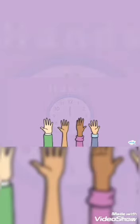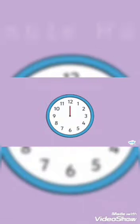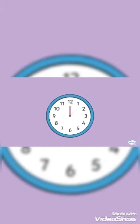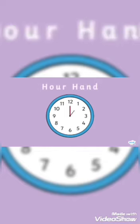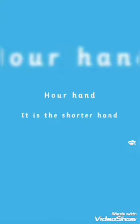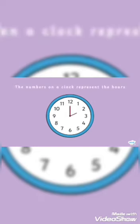Not those kinds of hands! We have two types of hands on the clock. This is the minute hand — the minute hand is the longer hand. The other type is called the hour hand. This hand lets us know what hour it is, and it is the shorter hand. The numbers on the clock face represent the hours.